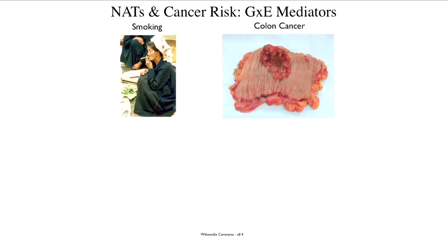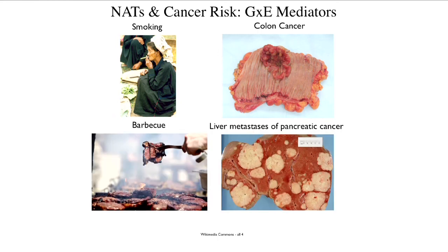Here is an ethnic minority Chinese person smoking a cigar, illustrating tobacco exposure. This is what a colon cancer looks like after surgical removal. Here is meat being barbecued at a marine cookout — the complex organic compounds in the charred and singed parts of barbecued meat are the things that raise the risk of pancreatic cancer. And this is what a liver looks like into which a pancreatic cancer has metastasized — the orangeish blobs are metastases from a pancreatic cancer.